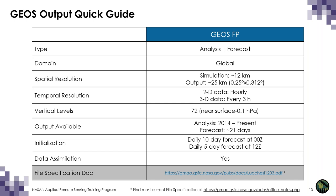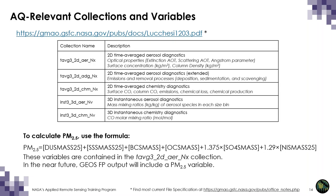A full and detailed description of all FP output can be found in the most current file specification document linked here. You can check for a more recent document at the link on the bottom of the slide. FP output is organized into collections, where collection names contain information about the frequency of output, the number of dimensions, the type of variable, and what kind of grid the output is on.